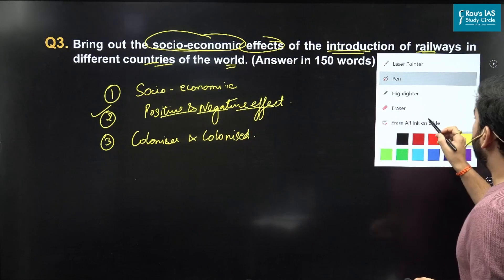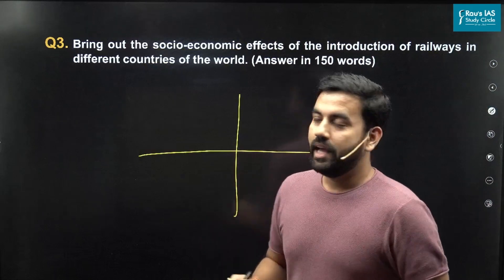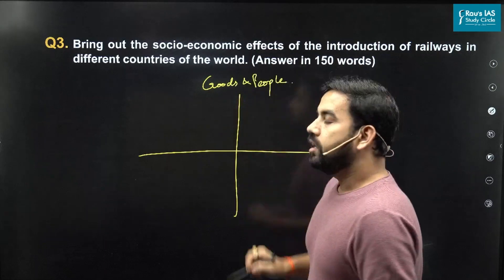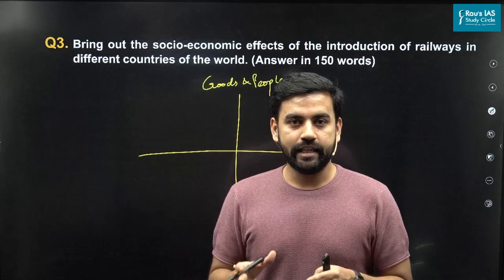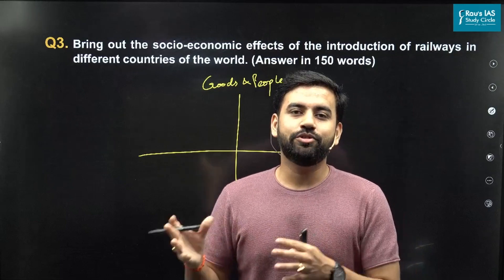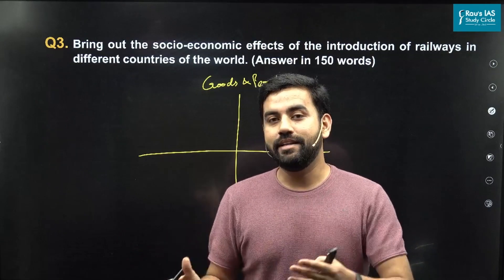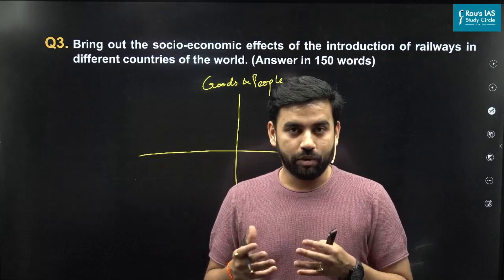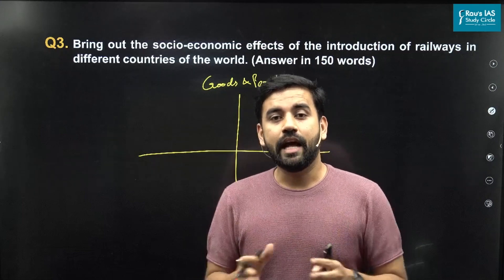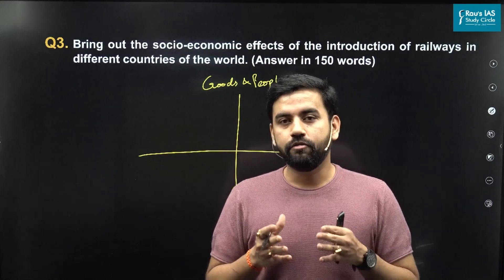The positive effects: for the first time, the introduction of railways helped in the movement of goods and people. Railways connected the hinterland — the deeper regions of a particular nation — to the coastal region, through which they were able to transport raw materials as well as finished goods, with raw material moving from inside to outside and finished goods from outside to inside. The movement of people also helped national unification, as people were easily transported from one place to another.